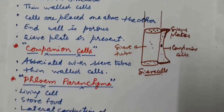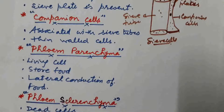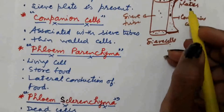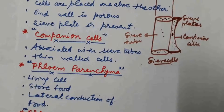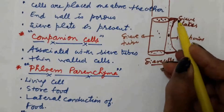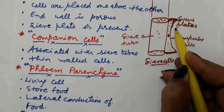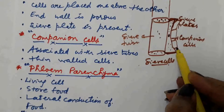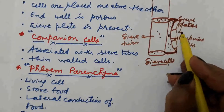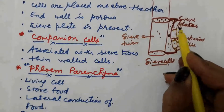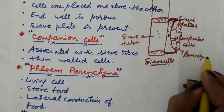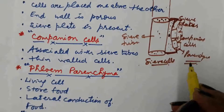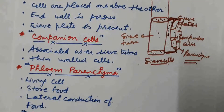The third cell type is phloem parenchyma. These are living cells. They store food material and help in the lateral conduction of food. These are thin-walled living cells. Phloem parenchyma stores food material and helps in lateral conduction of food.